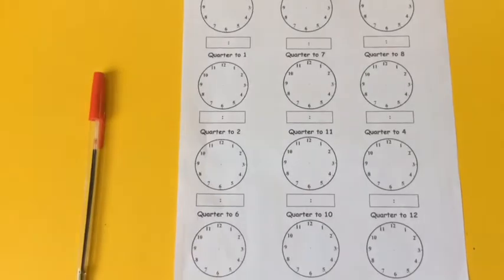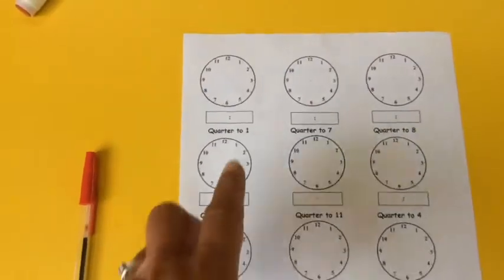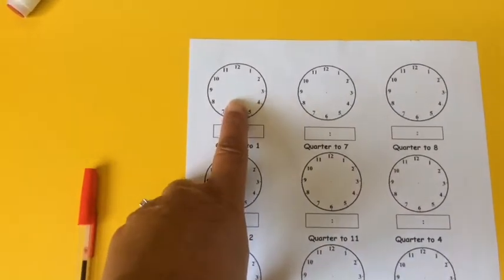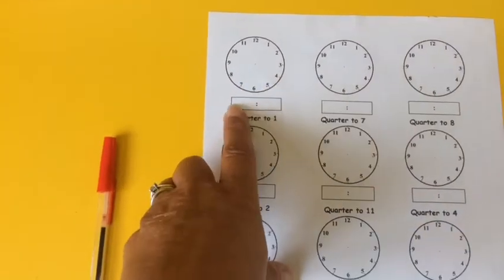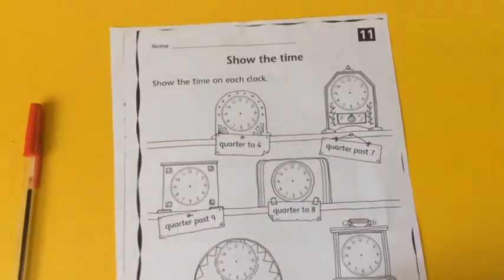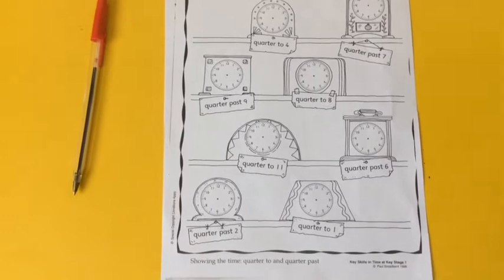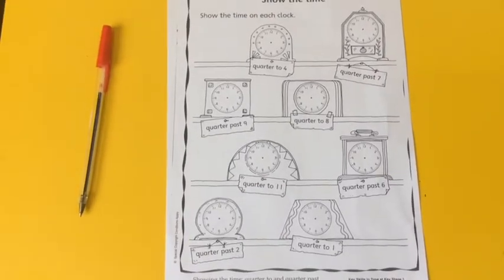Try this one next. Really get to grips with quarter to times. You have to put the hands on for the analogue time and write the digital time. Then if you turn over, be very careful here because some of the clocks they want you to do quarter to and some of them quarter past.